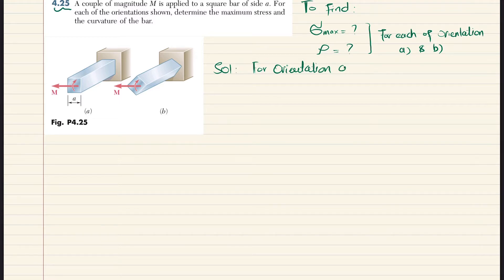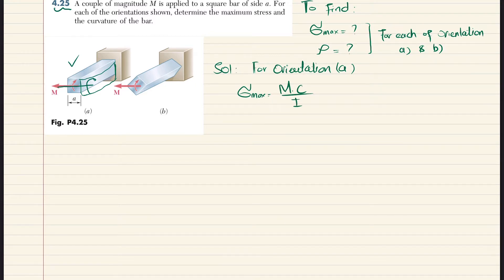For orientation A, the moment is applied about this axis and the bar will bend accordingly. To find the maximum stress, we know that sigma_max equals M times c divided by I. From orientation A, if I draw the cross-section, it will be a square with dimensions a by a, and the neutral axis is at the center. So c will be equal to a/2.